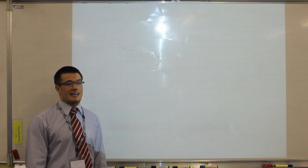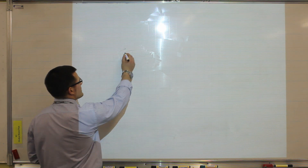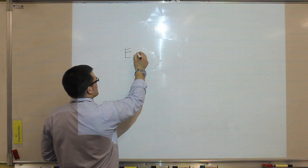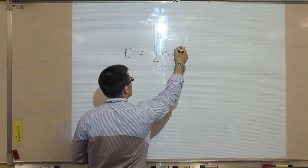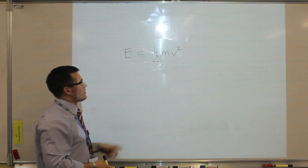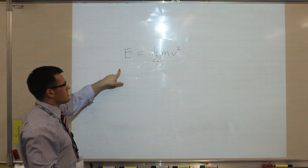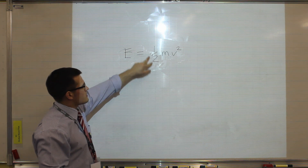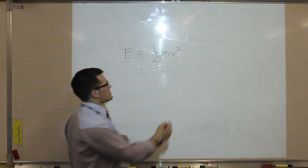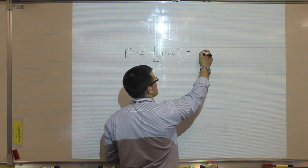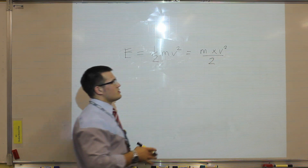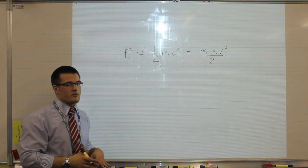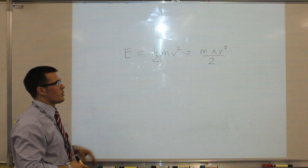This time we're going to look at rearranging one of the harder equations, which is the equation for kinetic energy. Kinetic energy is equal to half multiplied by the mass multiplied by velocity squared. At the moment, energy is the subject of this equation. You can also write that same equation as mass multiplied by velocity squared divided by two, and your teachers will choose one of those methods to use, so you should be familiar with at least one of them.